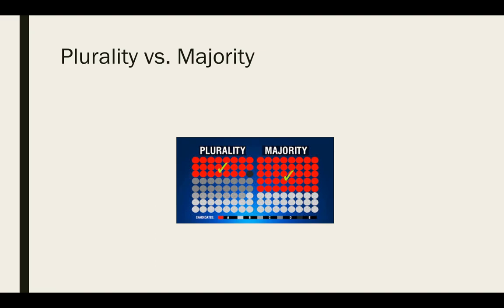And this is what you see in multi-party systems. In our system in the United States where we have a two-party system, you only have the red candidate and the gray candidate. So unless you have a 50-50 tie, you're going to have someone who gets the majority of votes, which is 50 percent plus one. Plurality is when you have multiple parties and people are splitting their vote — you're going to have a candidate who gets more than everyone else but does not have a majority or 51 percent.